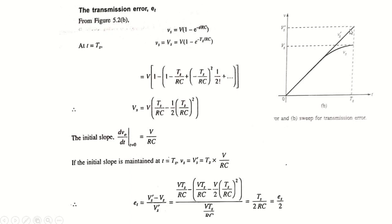The initial slope dV0/dt at t = 0 is V/RC. If this initial slope were maintained, the maximum value would be VS' = TS × V/RC. Substituting all values into the transmission error formula — (VS' − VS) / VS' — we get TS/(2RC). Since es = TS/RC, substituting gives et = es/2. This implies that the transmission error equals the sweep speed error divided by 2.